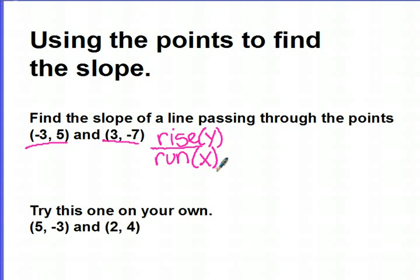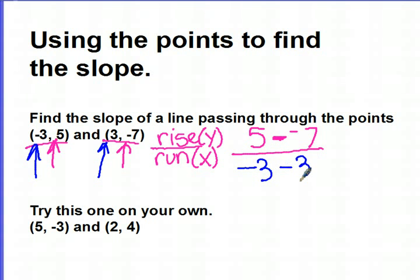So to do this, we're going to actually subtract. Again, always start with the point on the left. So this would be 5, because we're starting with the y values, minus negative 7. We're finding the difference between the 2 points, so we use subtraction. So the y's go on the top. Now we go back to the x's. And again, I'm going to start with the number on the left, then the number on the right. So this would be negative 3, minus 3.